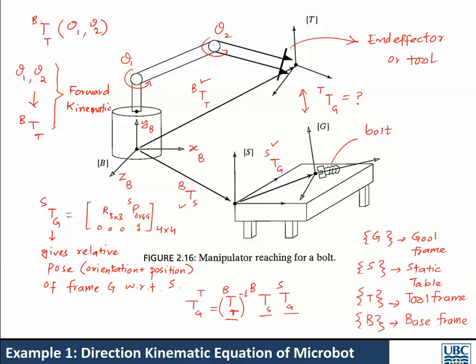In the next few slides, we will find a systematic way to compute this transformation matrix — deriving equations in terms of theta 1 and theta 2. Every time theta 1 and theta 2 change, we plug those values into the equations to find the transformation matrix T that locates the tool with respect to the base.